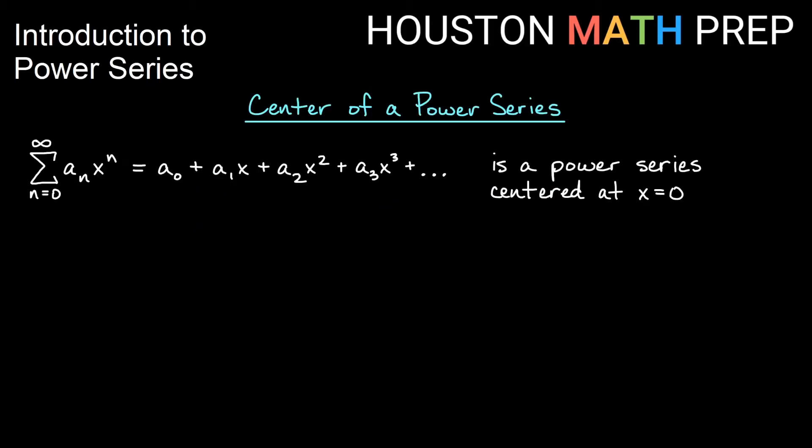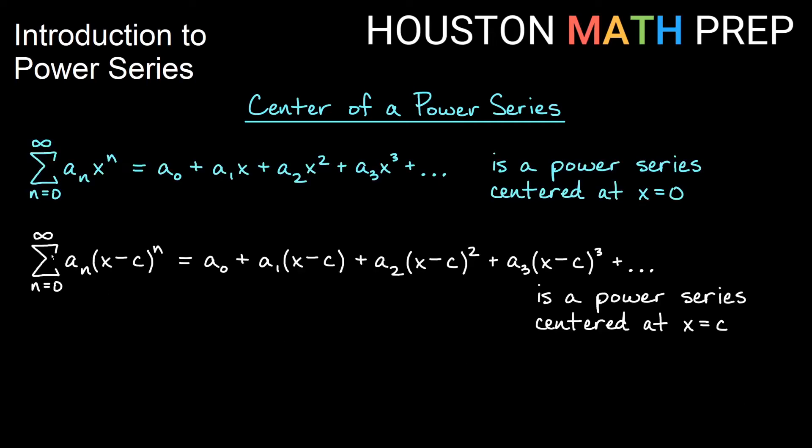If we talk about a power series, the sum from 0 to infinity, a sub n x to the n, the power series form that we've been looking at so far, that's a power series that's centered at x equals 0. If we look at a different type of power series, where it's the sum from 0 to infinity of a sub n, and then we have a quantity x minus some constant to the n, then that's a power series that is centered at that constant.